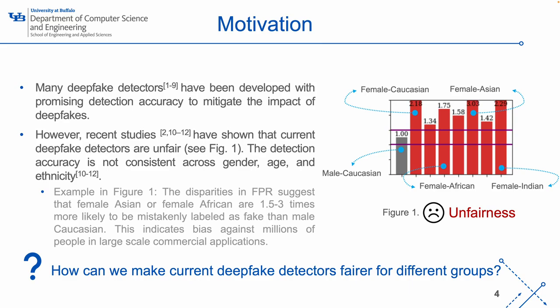Here is an example from these works. Figure 1 illustrates the false positive rate (FPR), signifying the misclassification of real as fake, among various groups: male Caucasian, female Caucasian, female African, female Asian, female Indian, etc. The figure reveals disparities in FPR, suggesting that female Asians or female Africans are 1.5 to 3 times more likely to be mistakenly labeled as fake than male Caucasians. This indicates bias against millions of people in large-scale commercial applications.